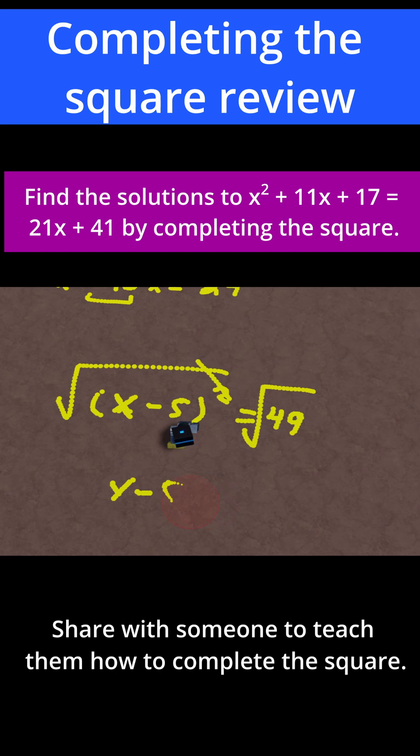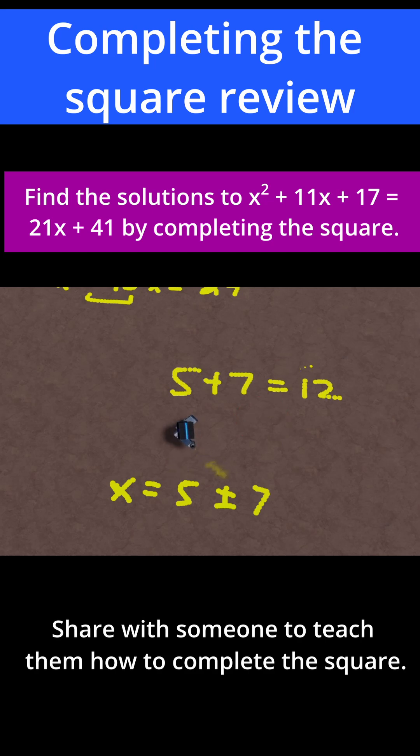So I'm going to get that x is simply equal to 5 plus or minus 7. And I can just find both solutions very easily by taking the positive and the negative solution. 5 plus 7 equals 12. That's one solution. 5 minus 7 equals negative 2. That's our other solution.